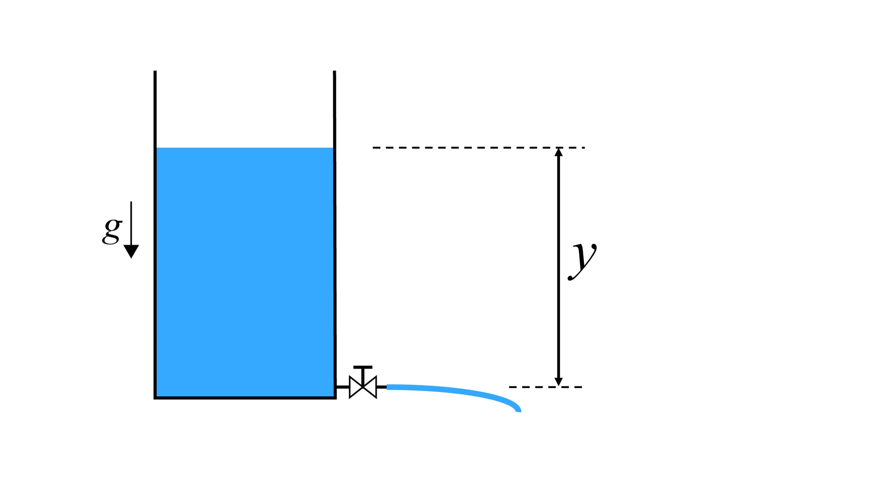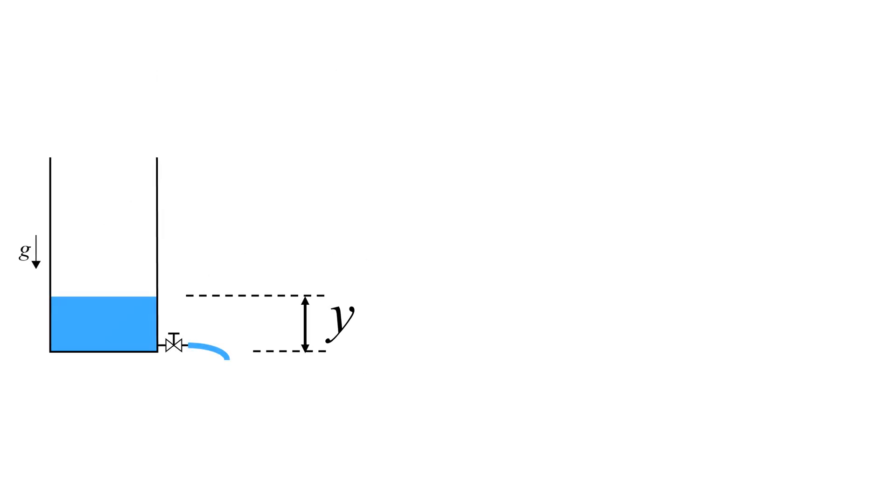Provided that we have a water container with an initial water height of 1 meter. Now, when you open the valve at the bottom of the water tank, you can drain the water.